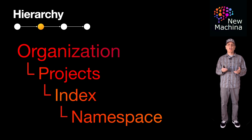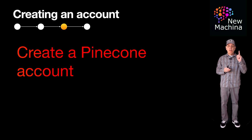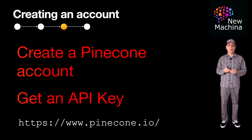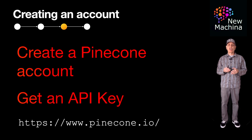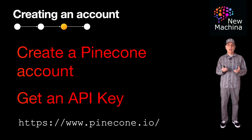In Pinecone, common operations are creating indexes, upserting, deleting, fetching, or querying vectors. But before you can do all of this, you need to first create a Pinecone account, and second, you need to get an API key. You can do this by going to the Pinecone website and signing up for an account if you don't have one, or logging in if you already do. Once logged in, navigate to the dashboard and select the project. On the dashboard, under your project, look for a section labeled API keys or a similar option in the navigation menu. If an API key has already been generated, you'll see it listed there and can copy it by clicking the copy button. If you need to create a new API key, there should be an option to generate a new key — click on it, name your key, and then generate it. Once the key is generated, copy it for use in your applications.